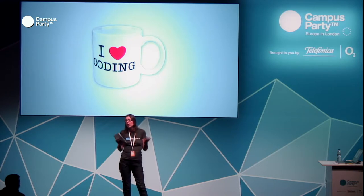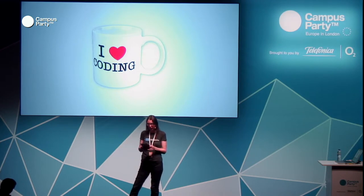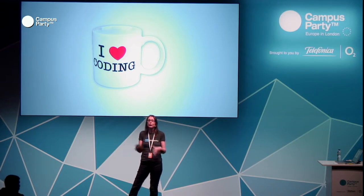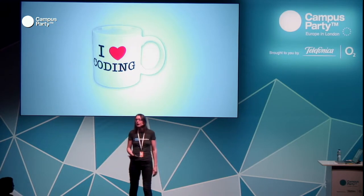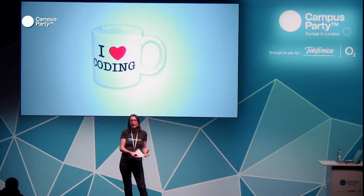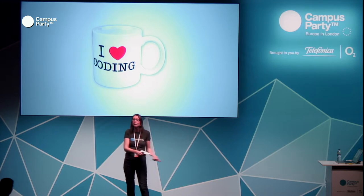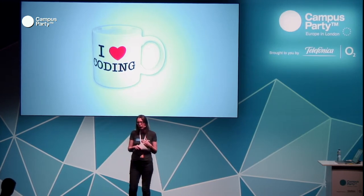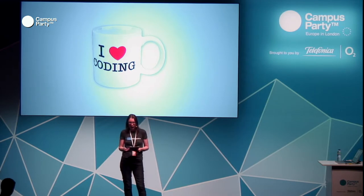Burn-up charts are something else we use — assigning points to the work you're going to do and mapping how many points you've closed off against your delivery date. It's a really effective way of measuring progress. We also use sprints from Scrum, where you develop in iterations. Agile development in general is all about iterative development — do a small bit, check it, do another small bit, rather than trying to build a big system in one go. At the end of every sprint we do a retrospective: looking back at what we did, how we can make it better, what we can change in the next two weeks.